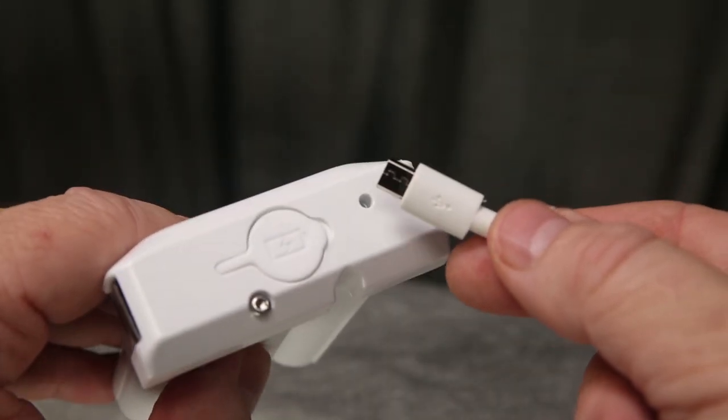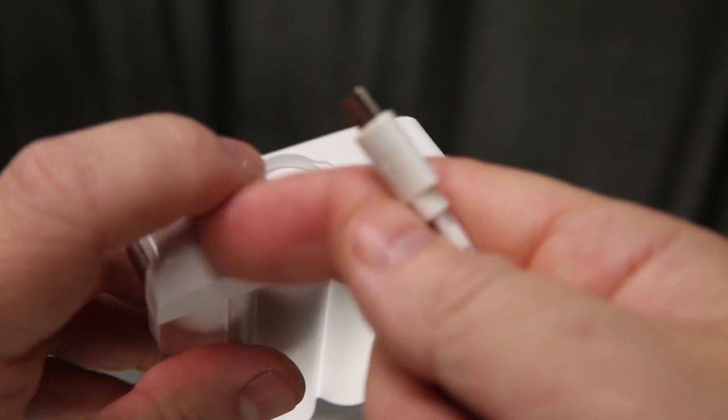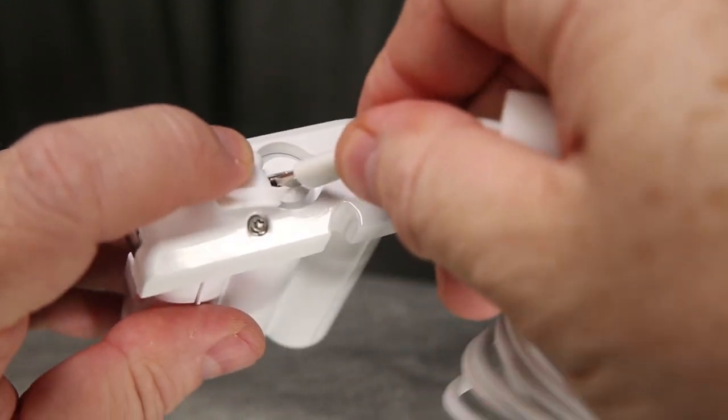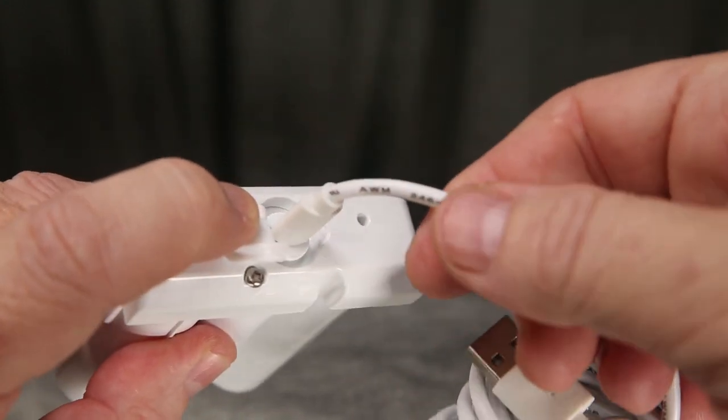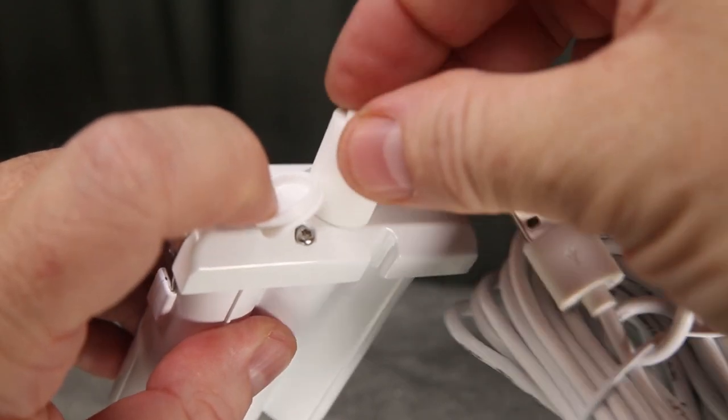Simply pull aside the battery's protective silicon cover and plug in the micro-USB. A silicon boot covers up the connection, keeping it weather-sealed.